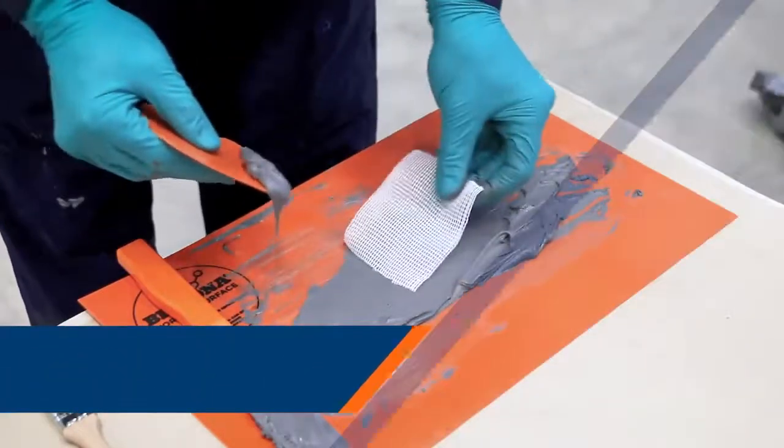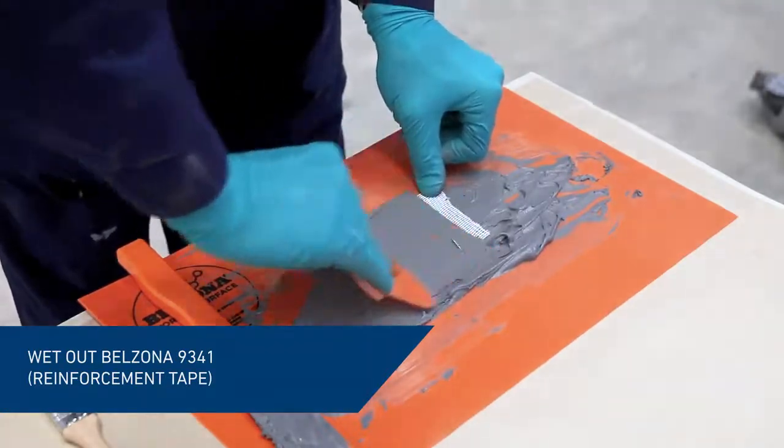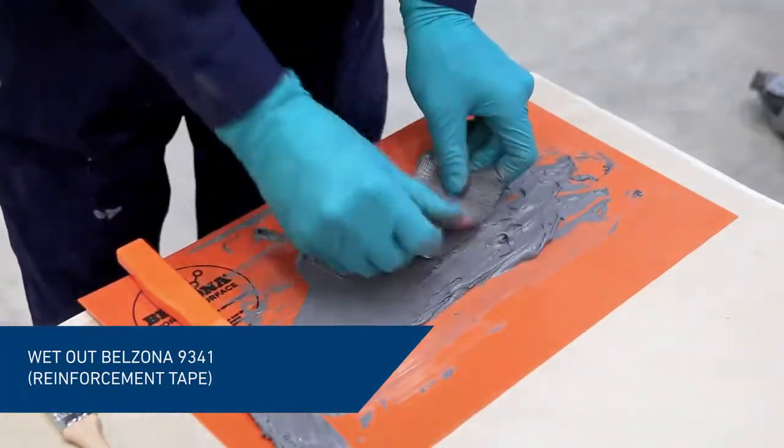Take a pre-cut piece of Belzona 9341 reinforcement tape and wet it out with the mixed material.